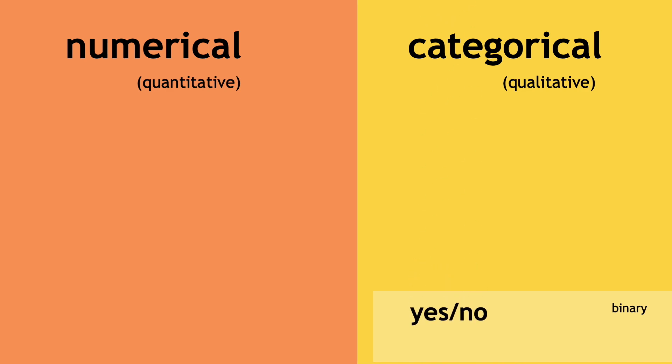For categorical data, we have binary variables, such as yes, no to a particular question, like whether someone showers in less than 10 minutes, whether they are currently a student, and so on. This is any variable where we have just two options.